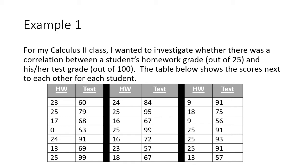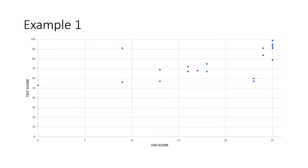Each student—we see the first student had a homework score of 23 out of 25, but their test score was a 60 out of 100. I did that for all 21 students in my class.